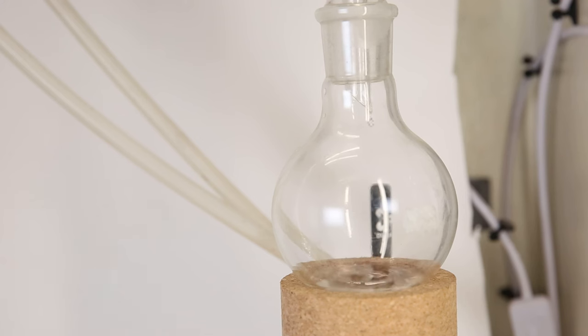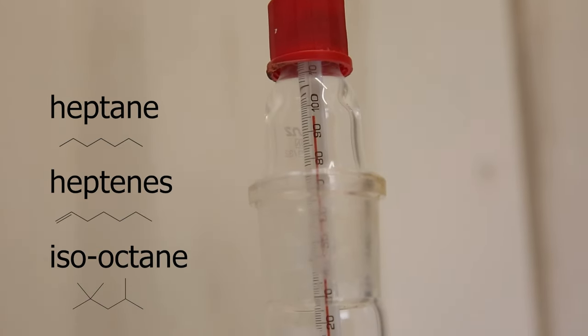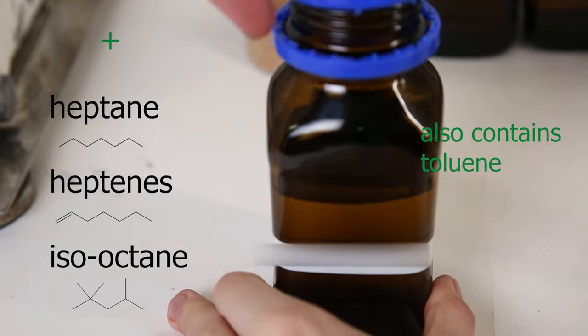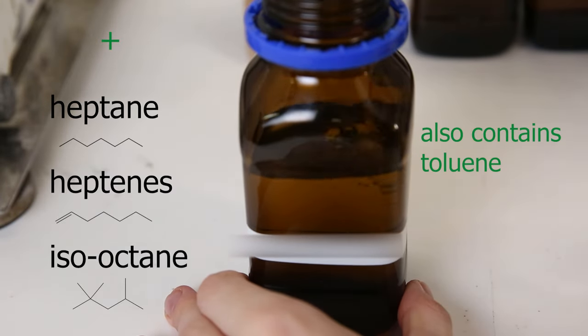I start distilling over the rest of the liquid around 96°C, which should be straight-chain heptanes, heptenes, and iso-octane. When that was finished, I added this fraction to the other fraction, containing most of these compounds.